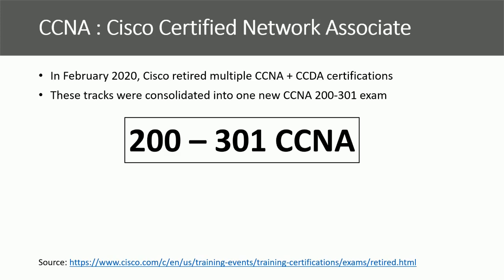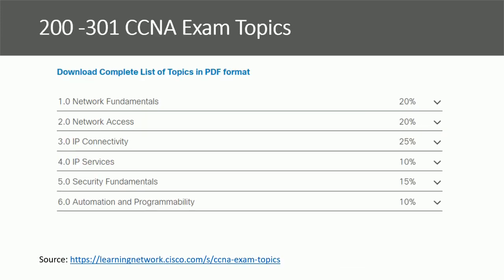Since February 24, 2020, Cisco offers only one certificate for CCNA, which is 200-301. This was reflected in the exam topics, which now cover different areas of networking including network fundamentals, network access, IP connectivity, IP services, security fundamentals, and automation and programmability. The weight for each subject is different and ranges from 20% for some topics, 10% for others, and 25% for topics like IP connectivity.